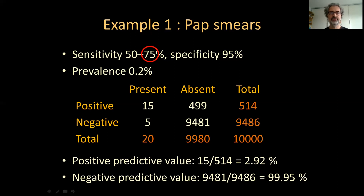These numbers indicate that if you get a negative result, you get a slight increase in relief — if you had a 1 in 500 chance, now it's less than 1 in 1,000. If you get a positive result, the doctor says 'don't worry' and orders a second test, and if necessary a follow-up biopsy, because the probability that there's actually something wrong, even in the best case scenario, is only 3%. So you are vastly more likely to not have cervical cancer with a positive result on your screening test than to actually have it.